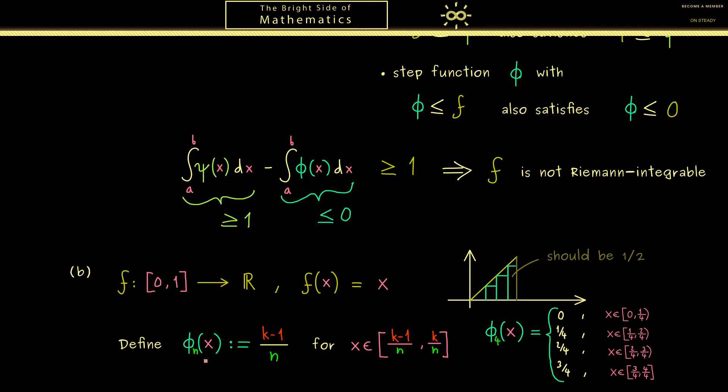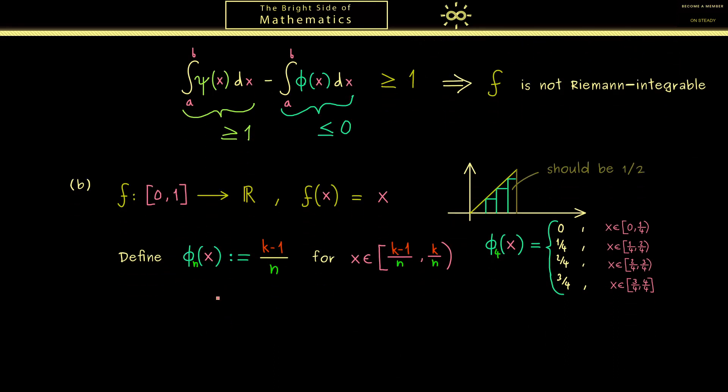Okay maybe it's not so precise because here we should have chosen an open interval. However then you see it will clash with the last case here. However we can ignore all of that because you already know for the integral the boundary points here don't make any difference. Speaking of the integral maybe let's immediately calculate the integral of φ_n.